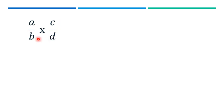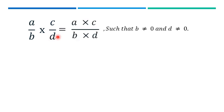If we have the product of these two fractions, we multiply the numerators together and the denominators together, giving us (a times c) over (b times d), such that b and d are not equal to zero, since no denominator can equal zero.